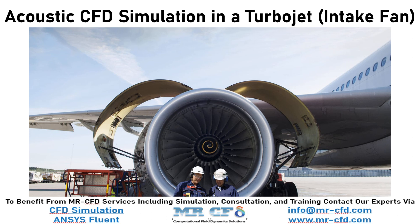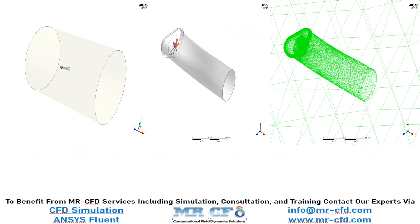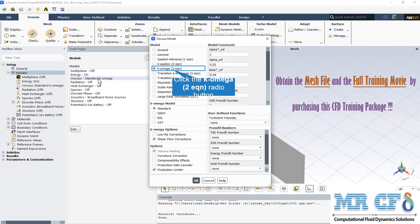The present problem simulates the airflow inside a turbojet and also examines the acoustic wave and the sound produced inside this turbojet. The current model is designed in three dimensions using Design Modeler software. The meshing is also done in three dimensions using the ANSYS Meshing software, and the mesh type is unstructured.